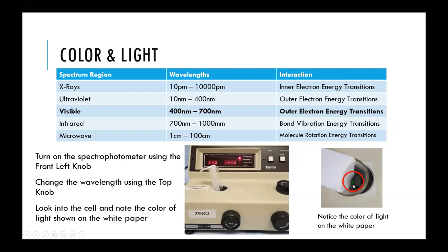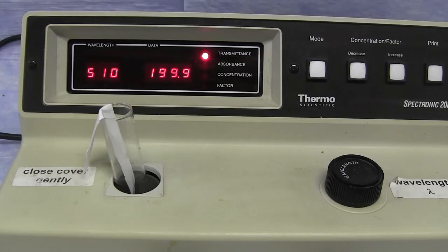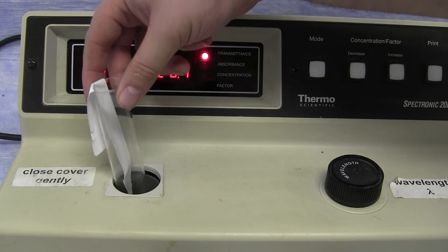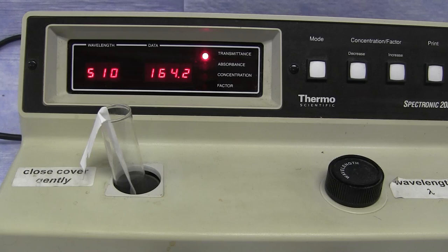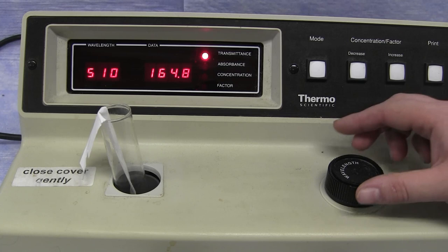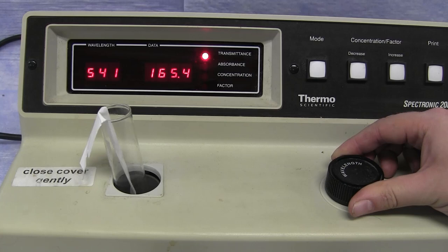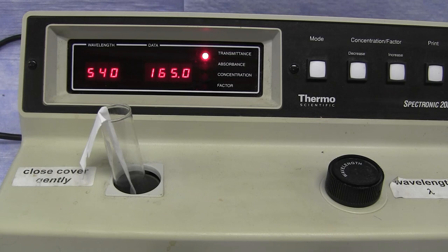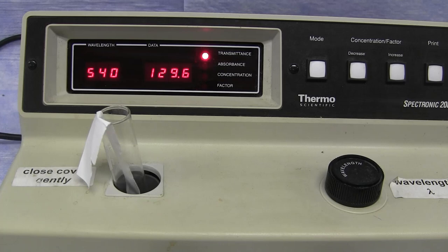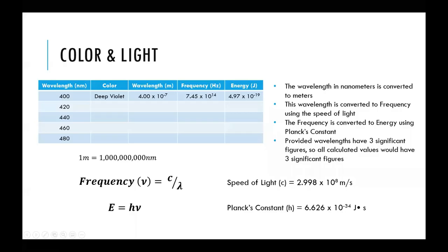You're going to be relating when you see a color to its overall energy. You'll look at different wavelengths of light from 400 to 700 nanometers, change the wavelength, and look inside a test tube placed in the spectrophotometer to see the color of that light. The lab report for this section involves converting wavelength from nanometers to meters, then converting to frequency using the speed of light, and converting that frequency to energy using Planck's constant. This should allow you to see which colors are associated with higher energy and which with lower energy.